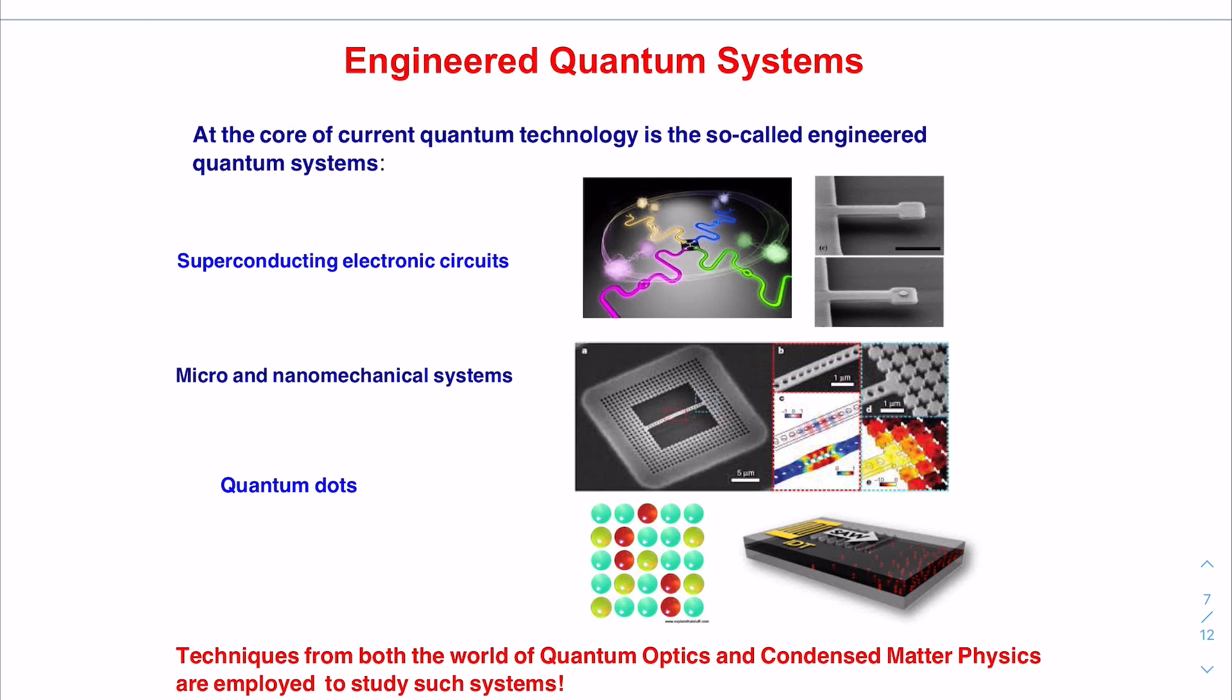For example, the so-called superconducting electronic circuit, which is also known as circuit quantum electrodynamics, cavity nano mechanical or optomechanical system, quantum dots and so on, are artificial quantum system.